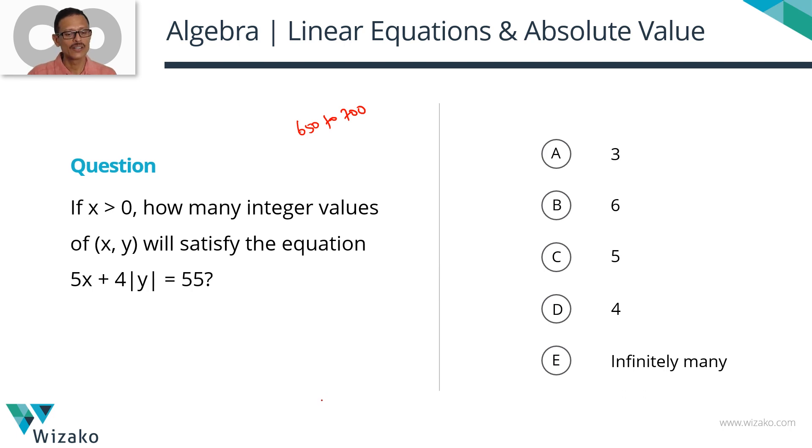If x is greater than 0, how many integer values of (x, y) will satisfy the equation 5x + 4|y| = 55?